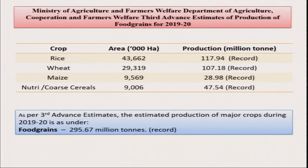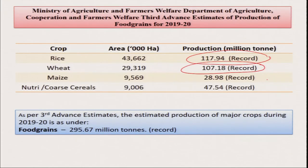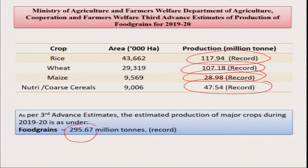According to the Ministry of Agriculture and Farmers Welfare, Department of Agriculture Cooperation, our total rice production is 117 million tons. Second is wheat at 107 million tons, and third is maize at 29 million tons. Apart from that, we are also growing different types of coarse cereals or millets — 47 million tons. Combined, that is about 295.67 million tons — near about 300 million tons of total food grain production. Within this food grain, two parts are cereals — rice, wheat, maize, millet — and the second part is pulses.